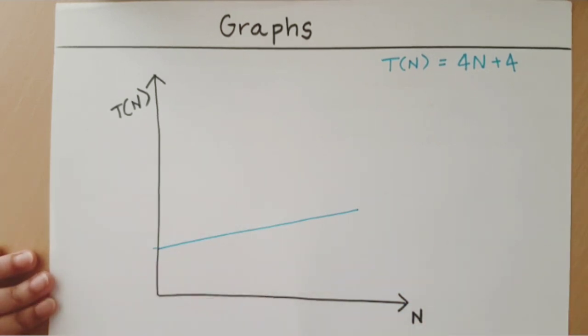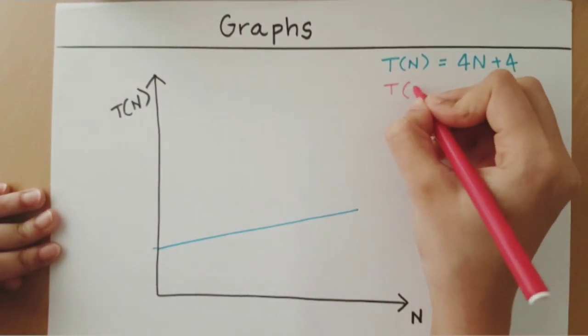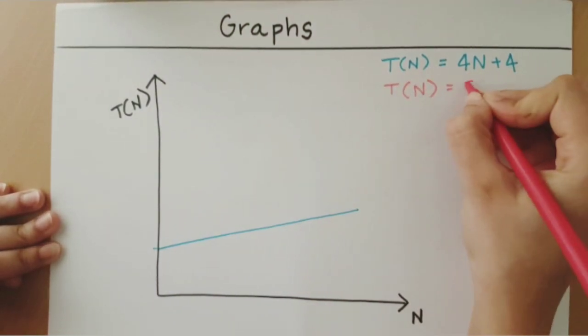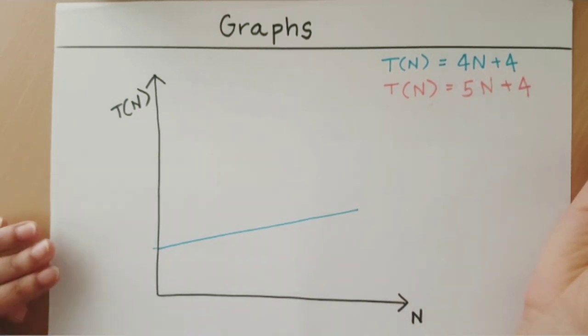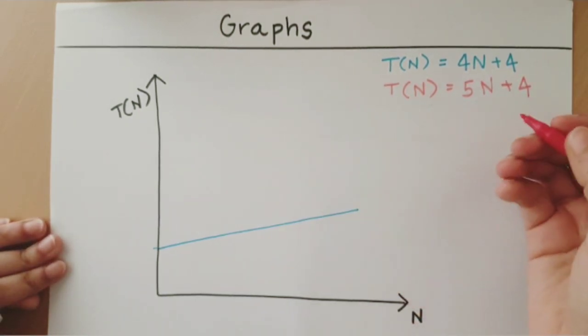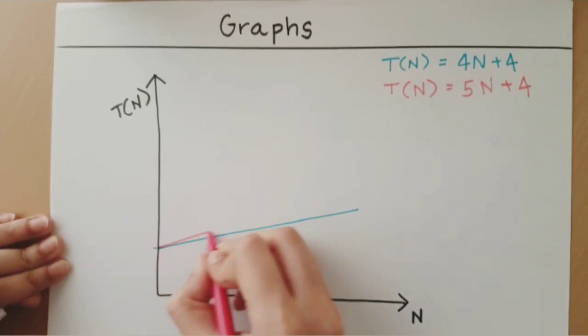Assuming that this is 4, the y-axis is 4. Now in the second implementation of our algorithm, we got the time as 5n plus 4. When we plot this, we get a line like that.